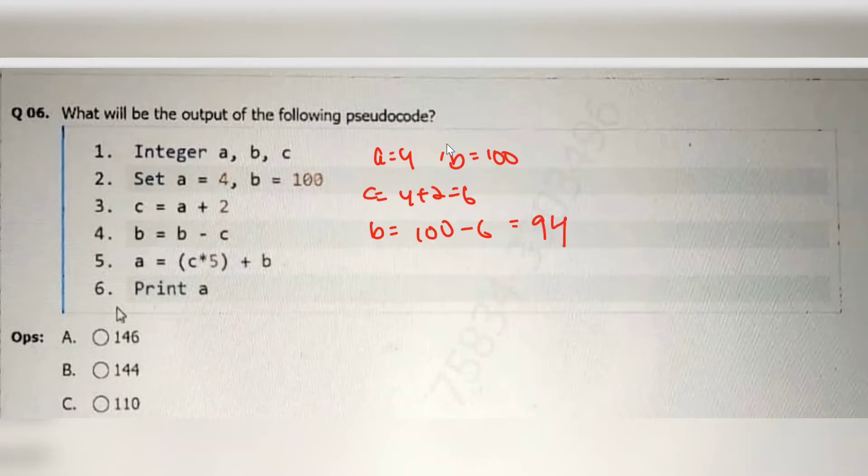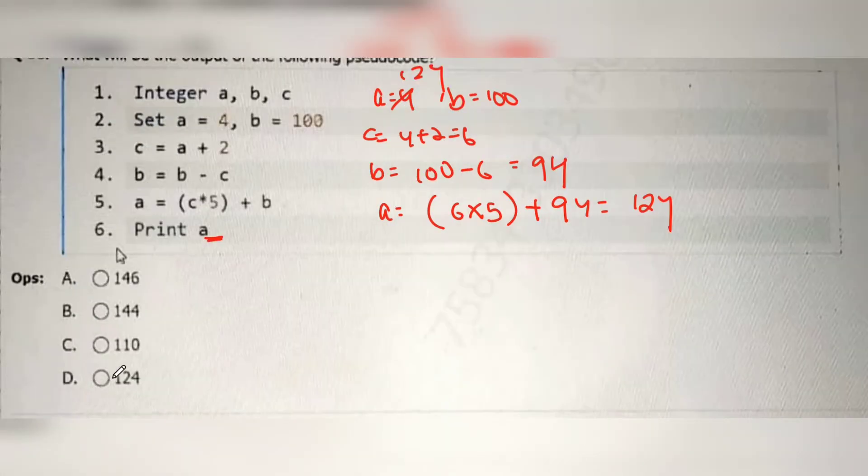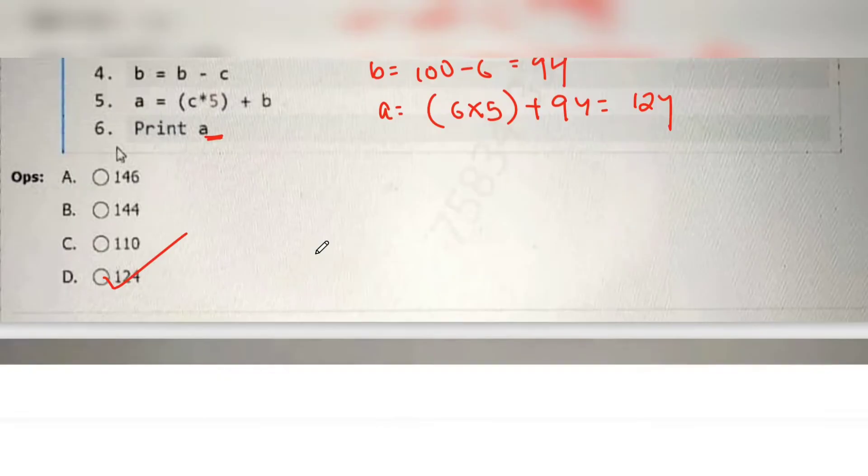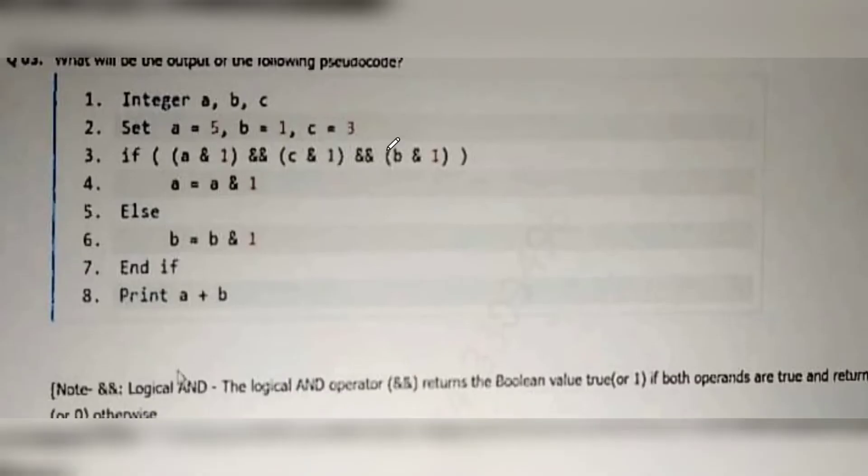Then A equal to C star 5 means 6 into 5 plus B that is 94 means 30 plus 94 that is 124. Now A value is updated to 124. So print A means 124 will be printed. So the output is option D.